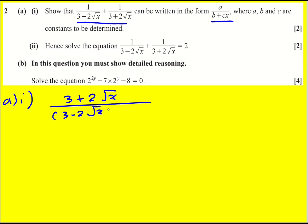So you can see kind of why that's going to happen. Then I'm going to multiply by 3 minus 2 root x.